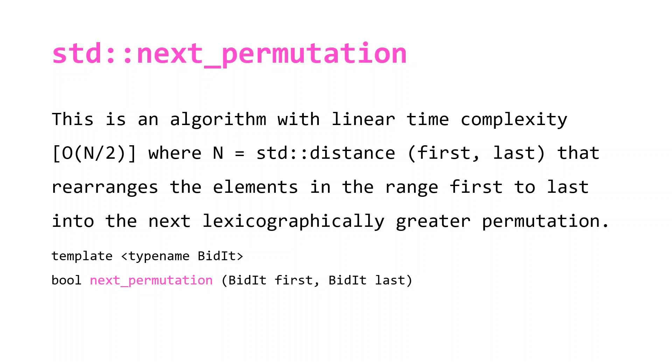Lexicographically here meaning just the order that you would find words in a dictionary. We can note from our function declaration that it takes two bidirectional iterators as parameters. If you're not familiar with the different types of C++ iterators, you can click on this link here for a video explaining those.